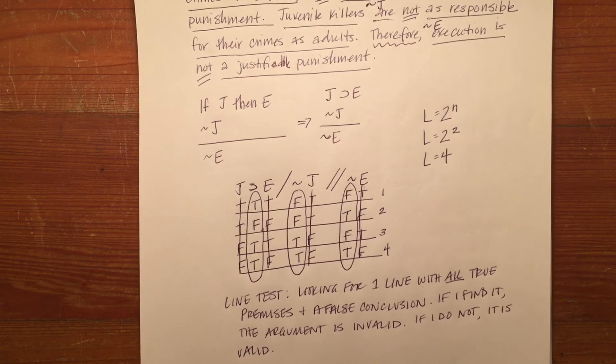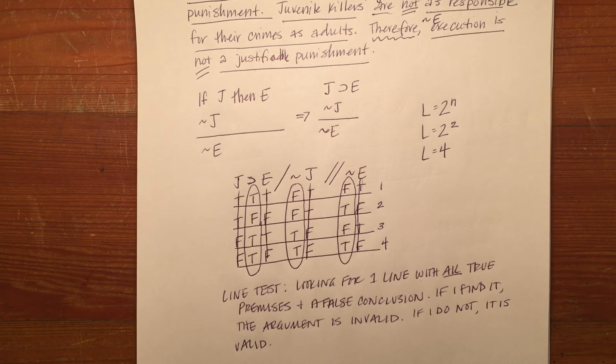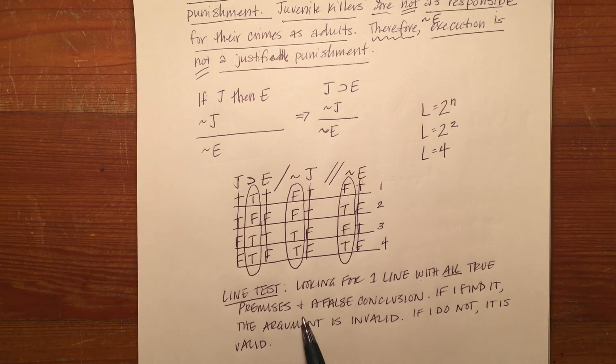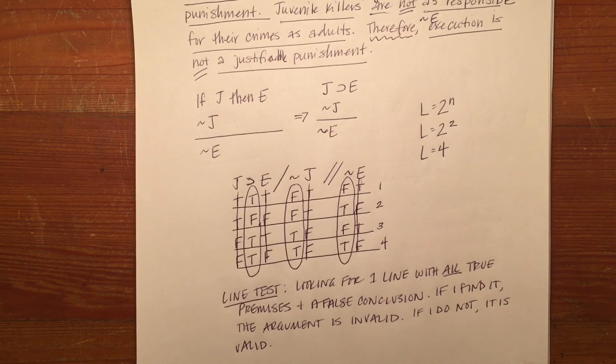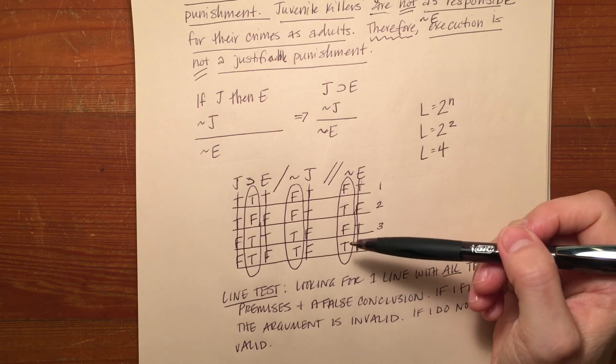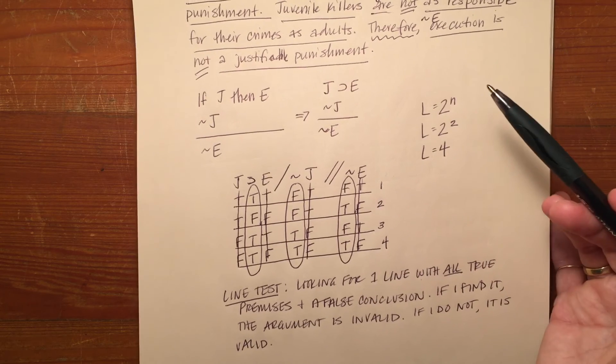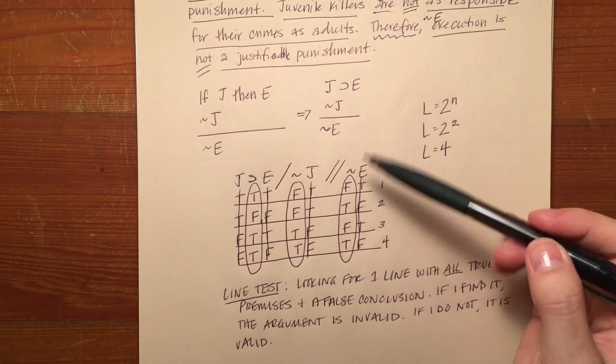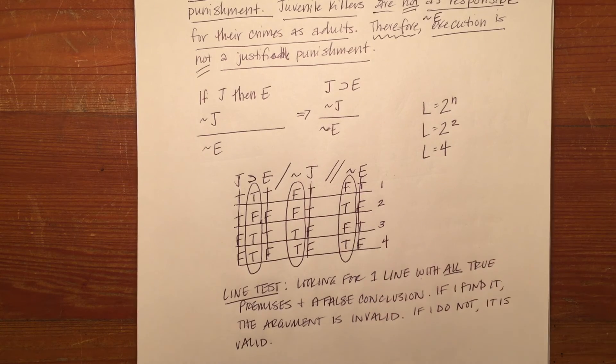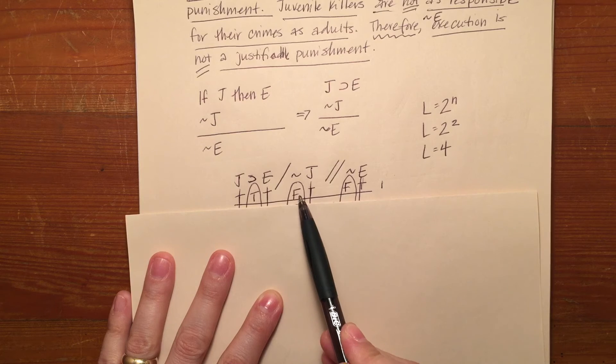So I'm really testing for invalidity. I'm going to take a shortcut. I know that I'm looking for one line with all true premises and a false conclusion, so I don't need to look at lines two and four really at all because I don't have a false conclusion there. If you end up with an argument with no false answers in the conclusion then you know that it's a valid argument. But here we've got a false on line one and a false on line three. So I want to look back on those lines to see if the answers for my premises are also both true.